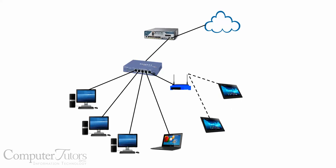So this first computer I'm pointing to could be called Blue1, this one Blue2, and this one Tablet4. To get to those, we have to have an IP address. Everything on the Internet also has a unique IP address. So let me pause and switch over to my whiteboard so we can discuss this more.